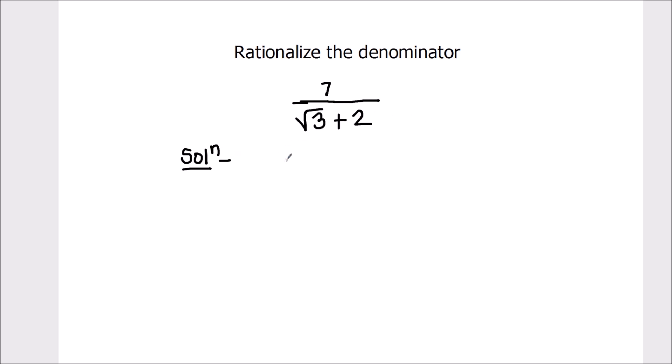In this type of expression, the rationalization factor or the factor by which we rationalize the denominator will be root 3 minus 2. So, let's rationalize the denominator.